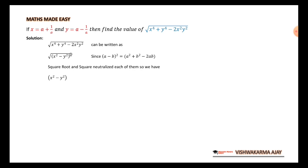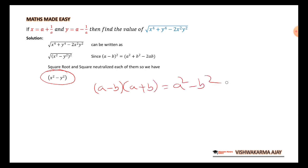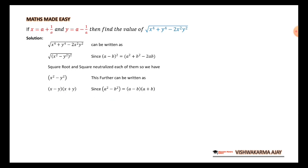Now the square root and the square both cancel each other, so the square root has no effect when we square the inside term. That leaves us with only x squared minus y squared. Now we have a formula for this: a squared minus b squared equals a minus b times a plus b. So x squared minus y squared can be written as x minus y times x plus y.